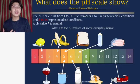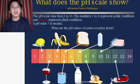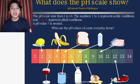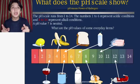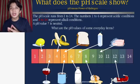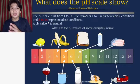pH is very important when it comes to acids and bases because pH determines whether a substance is acidic or basic. pH means 'power of hydrogen.' The pH scale runs from 1 to 14: numbers 1 to 6 represent acidic conditions, 8 to 14 represents alkaline conditions, and a pH value of 7 is neutral — meaning it is in the middle.